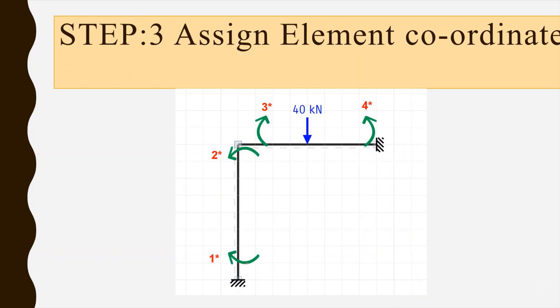The next step is to assign element coordinates. For every element there will be two end coordinates. We assign four element coordinates — 1*, 2*, 3*, and 4* — for this particular structure.